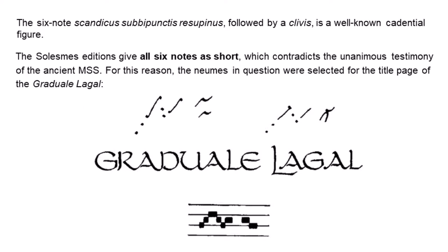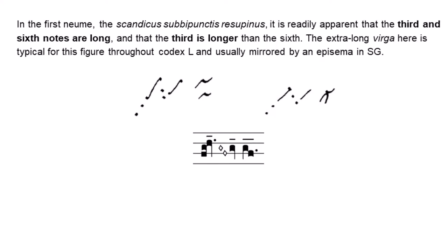The six-note scandicus sub-bipunctus resupinus, followed by a clevis, is a well-known cadential figure. The Solem editions give all six notes as short, which contradicts the unanimous testimony of the ancient manuscripts. For this reason, the neumes in question were selected for the title page of the Graduale and the Gaal. In the first neume, the scandicus sub-bipunctus resupinus, it is readily apparent that the third and sixth notes are long, and that the third is longer than the sixth. The extra-long virga here is typical for this figure throughout Codex L, and usually mirrored by an episema in the St. Gall neumes. It may be significant that the scribes never wrote scandicus plus perectus in this formula. Jan von Biesen proposes that the fourth and fifth notes here are extra short, exactly as in the corresponding figure in Byzantine chant.